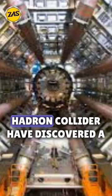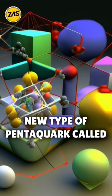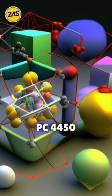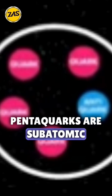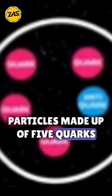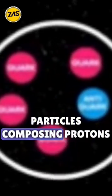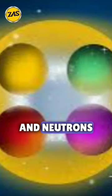Scientists at CERN's Large Hadron Collider have discovered a new type of pentaquark called PC-4450. Pentaquarks are subatomic particles made up of five quarks, which are fundamental particles composing protons and neutrons.